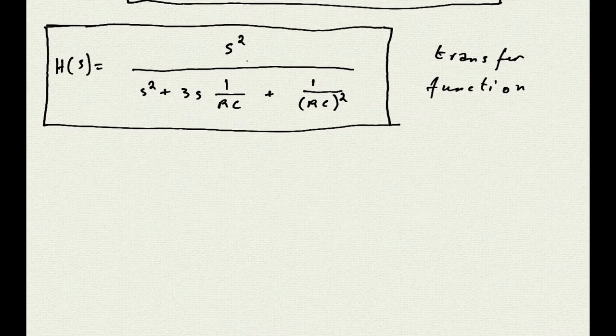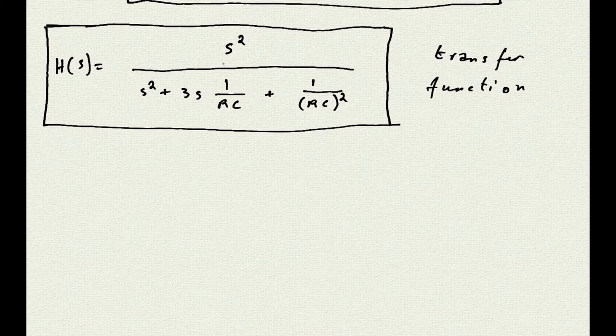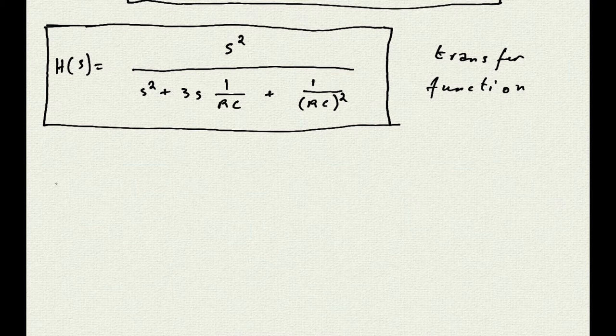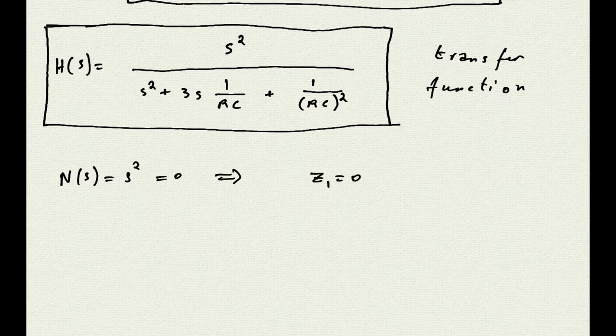You can see that the transfer function has two polynomials, one at the numerator and the other one at the denominator, both of the second grade. This tells us that the transfer function itself has two zeros and two poles. The two zeros, which are the roots of the equation of the numerator, are obviously both equal to zero.